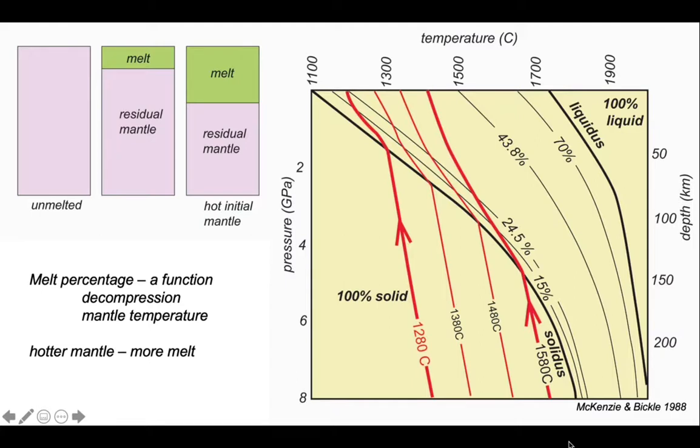That melt becomes oceanic crust. On the 1280 path, we generate a relatively small amount of melt, a small thickness of crust, compared to the 1580 trajectory.